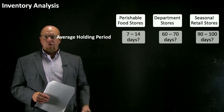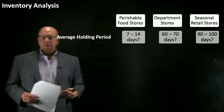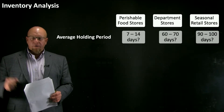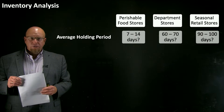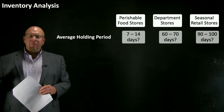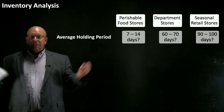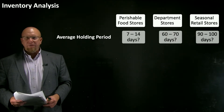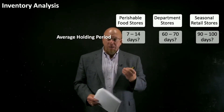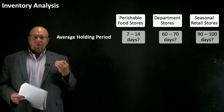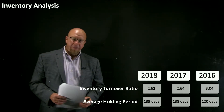It's important to consider the industry context. With retail athletic apparel like Under Armour and Lululemon, think about how different other types of stores are. A perishable food store like a fruit market, butcher, or bakery may have a holding period of just seven to fourteen days. A department store sells non-perishable but potentially seasonal or style-sensitive items, so the holding period is longer. A seasonal retail store like a ski shop may have an even longer cycle of 90 to 100 days. It's important to look at financial statement metrics in context — both the company's historical performance and the industry in which it operates.